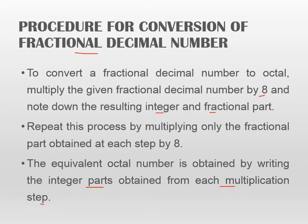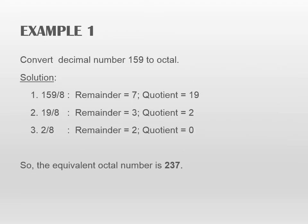Now let us see a few examples to understand this concept better. We have decimal number 159 and we have to convert it into an octal number.